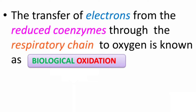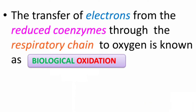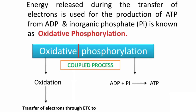Biological oxidation is the transfer of electrons from reduced coenzymes through the respiratory chain, or electron transport chain, to oxygen. We will see what the sources of electrons are, what reduced coenzymes are, and what the respiratory chain or electron transport chain is. Oxidative phosphorylation means the energy released during the transfer of electrons is used for the synthesis of ATP from ADP and inorganic phosphate. This is a coupled process involving oxidation — the transfer of electrons through the electron transport chain — and phosphorylation — the joining of inorganic phosphate to ADP to synthesize ATP.